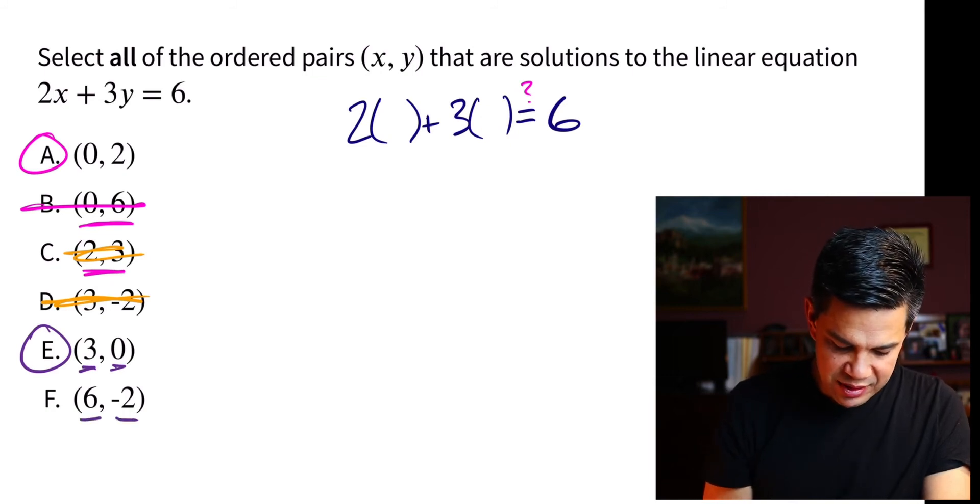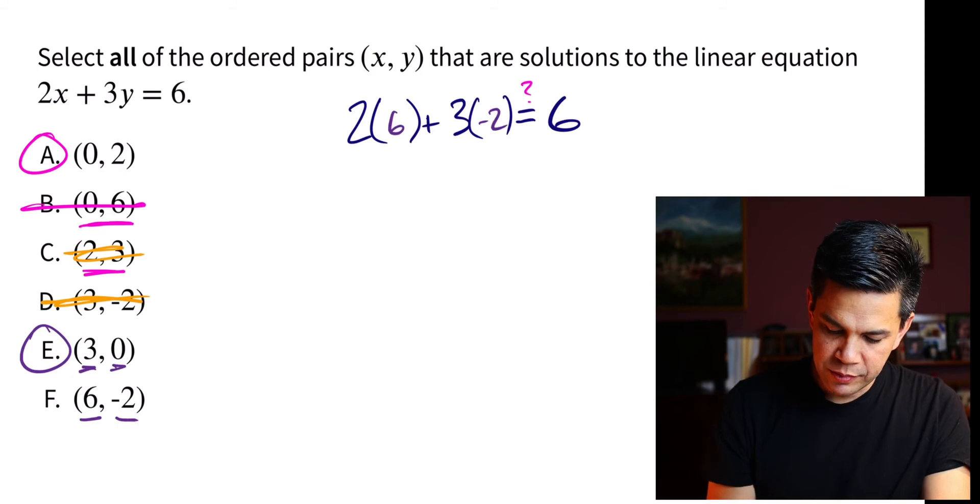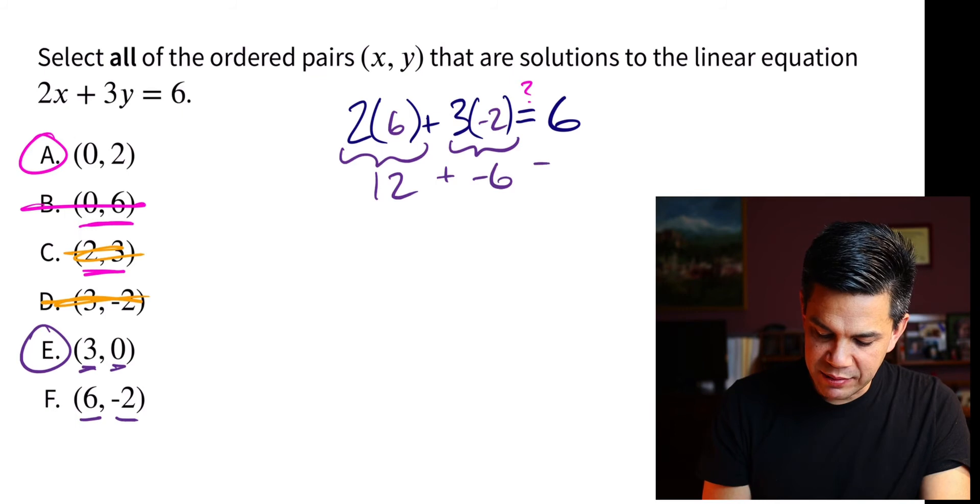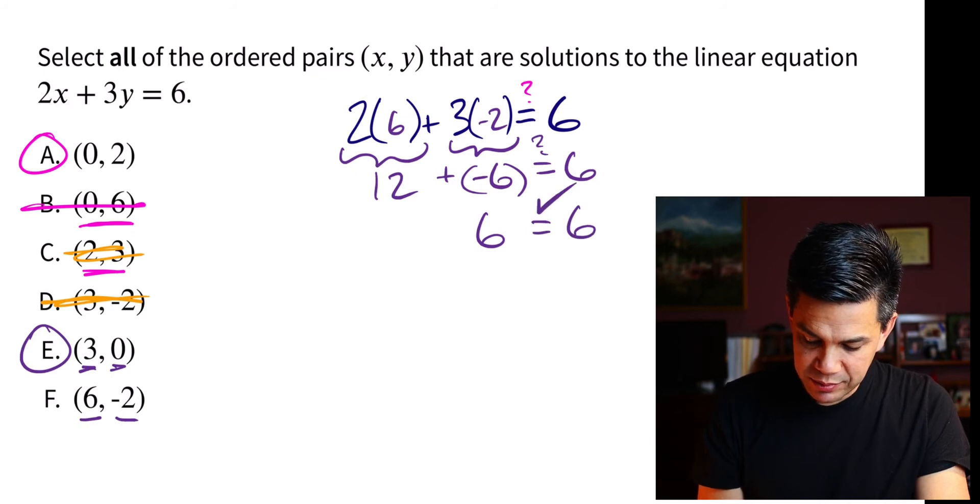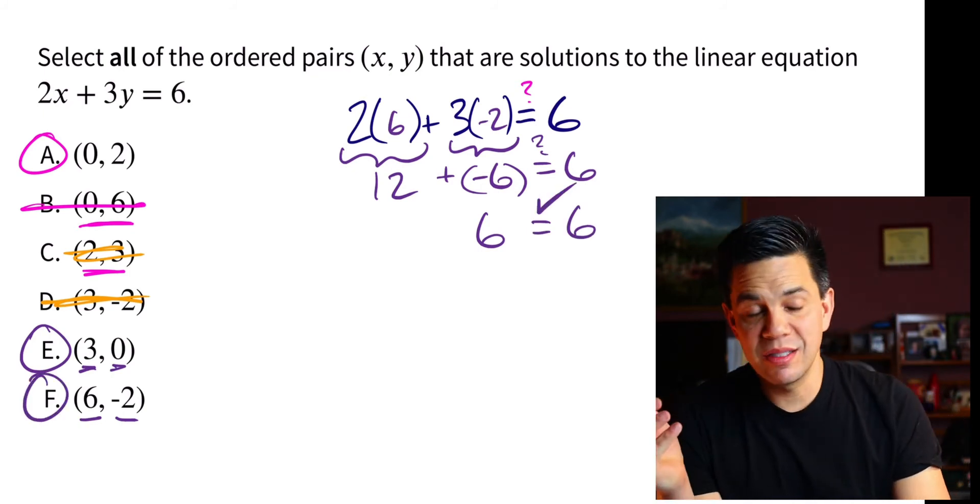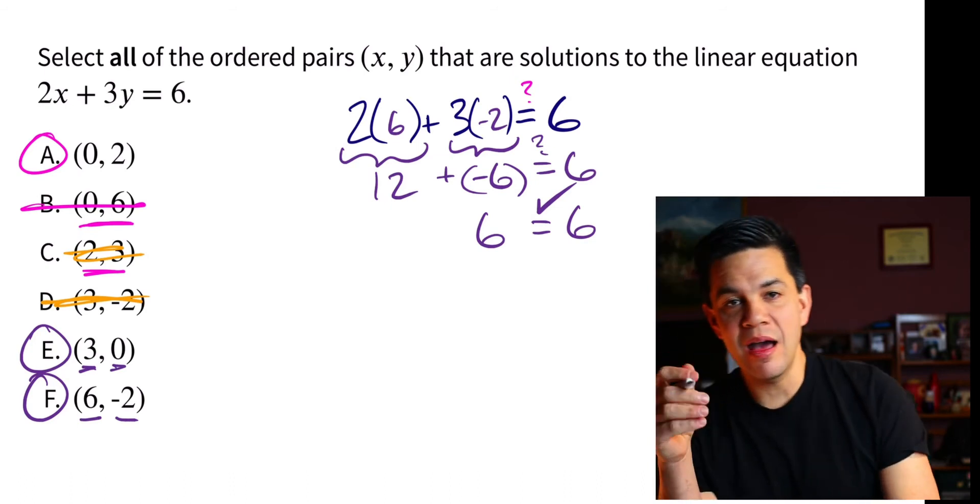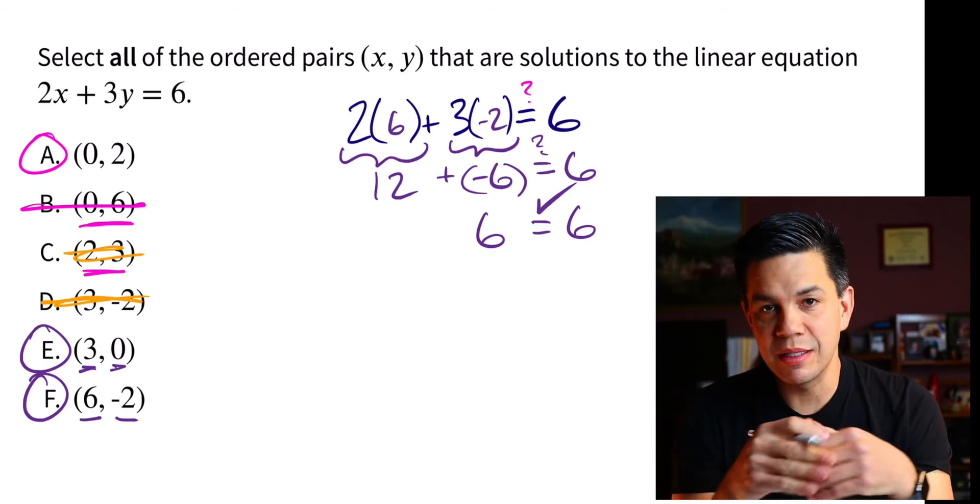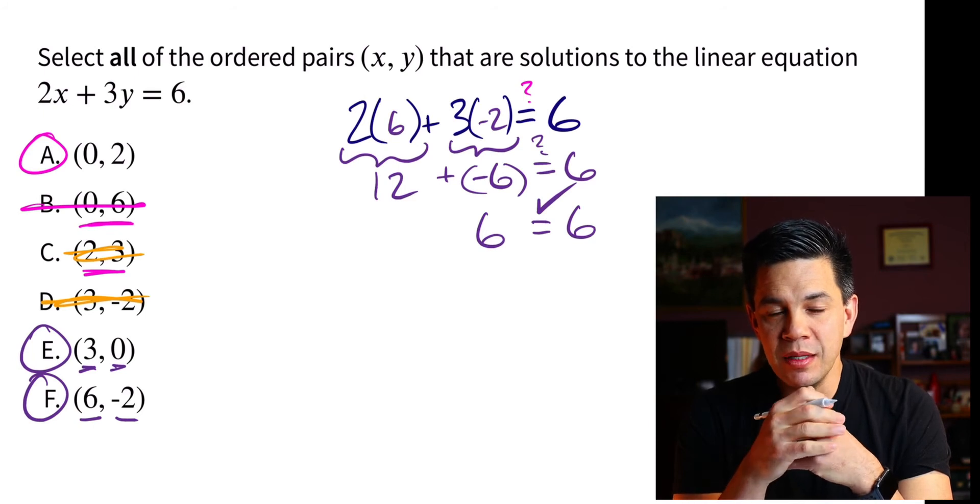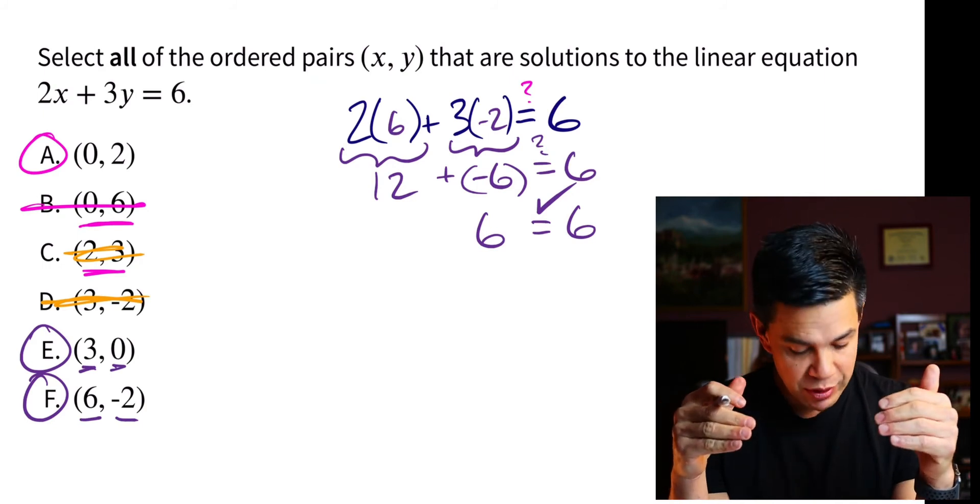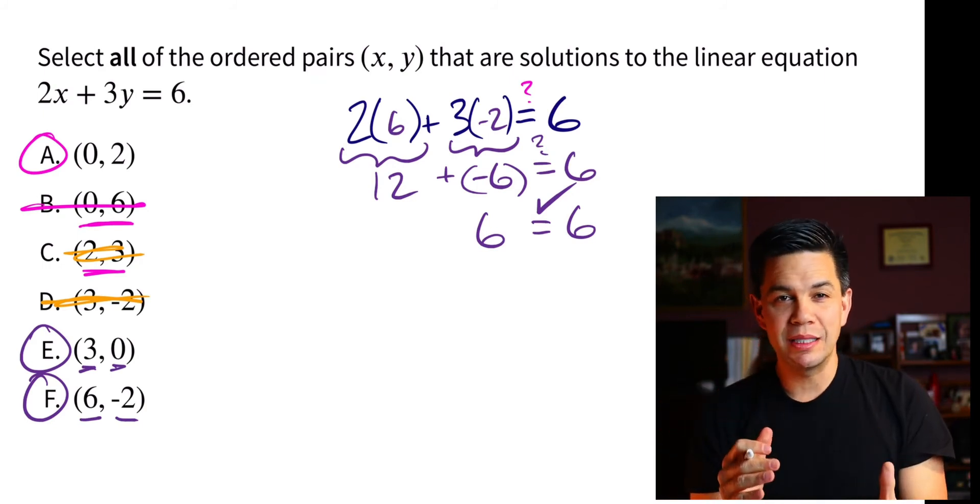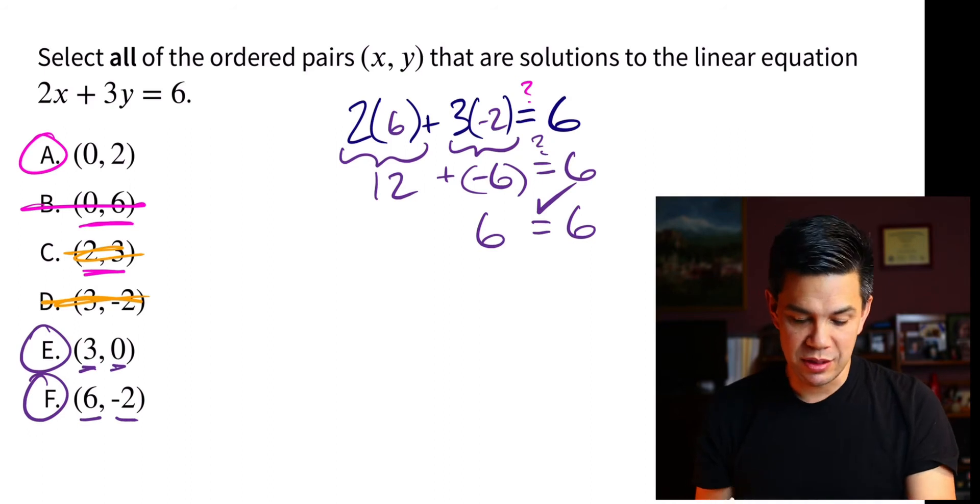Okay, and finally, we're going to check 6 and negative 2. And 2 times 6 is 12 plus 3 times negative 2 is negative 6. Question mark. Does 6 equal 6? And I think we have another match. All right, so in this situation, we have A, E, and F. We have three solutions here to this linear equation. Now, there is an infinite amount of solutions to this equation. Just the ones that were given here, we're just checking to see if those are solutions to this linear equation.